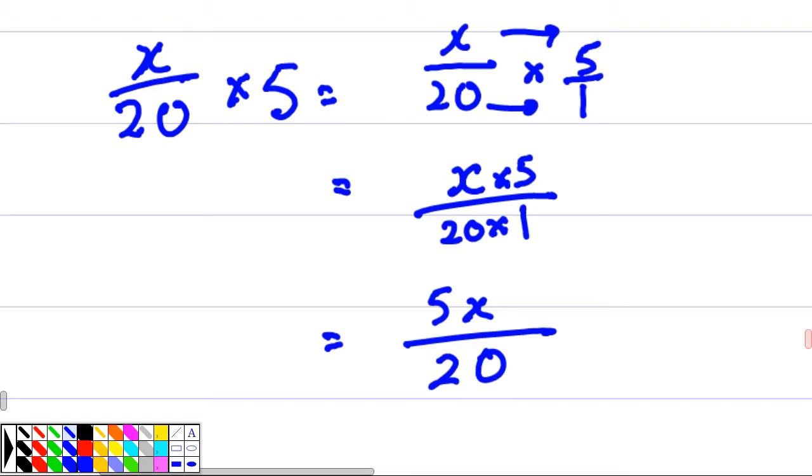How do I simplify? Both divided by 5. So I try to divide by 5, that's 1. Divide by 5, that's 4. Therefore the answer is x over 4.